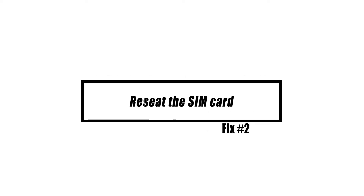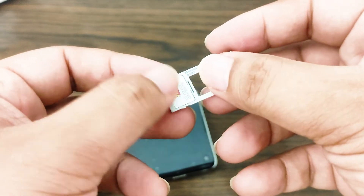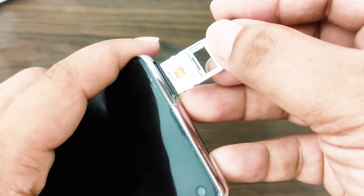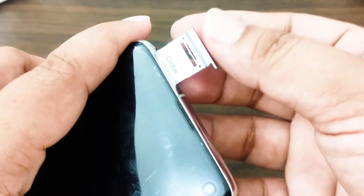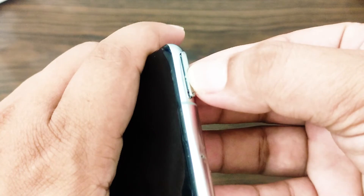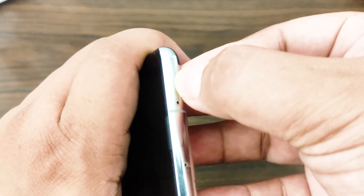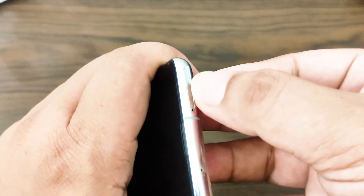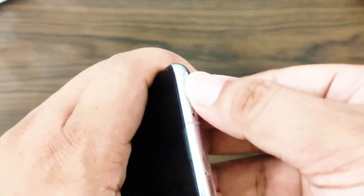Turning the phone off and removing the SIM card works for some Samsung customers to resolve this issue. A SIM card issue may be fixed using this step in the troubleshooting process. Ensure that the phone is powered off before removing the SIM card. Reinstall the SIM card after around five minutes of waiting. This allows you to re-establish the connection between your phone and your wireless network, and the glitch in your phone's network connectivity may be remedied by this method.